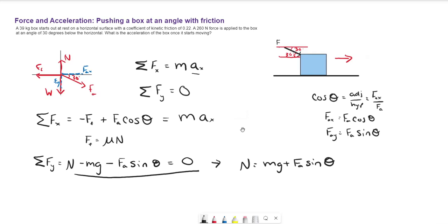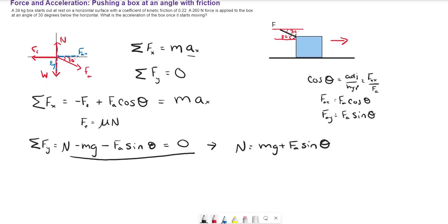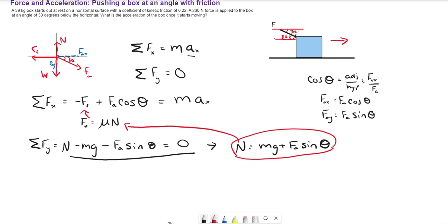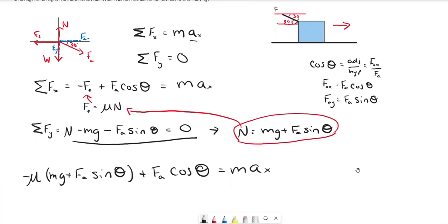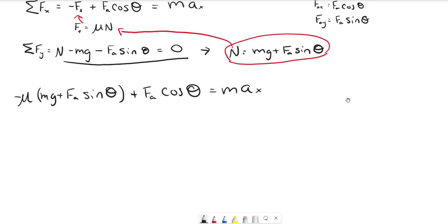Now we can plug this into our equation for friction force and then solve for acceleration. We're taking the normal force expression, plugging it into the friction force, and then plugging that into the x-axis equation. We get: negative mu times (mg plus FA·sine(theta)) plus FA·cosine(theta) equals mass times acceleration in the x direction. Now we just have to do some algebra and plug in our values.